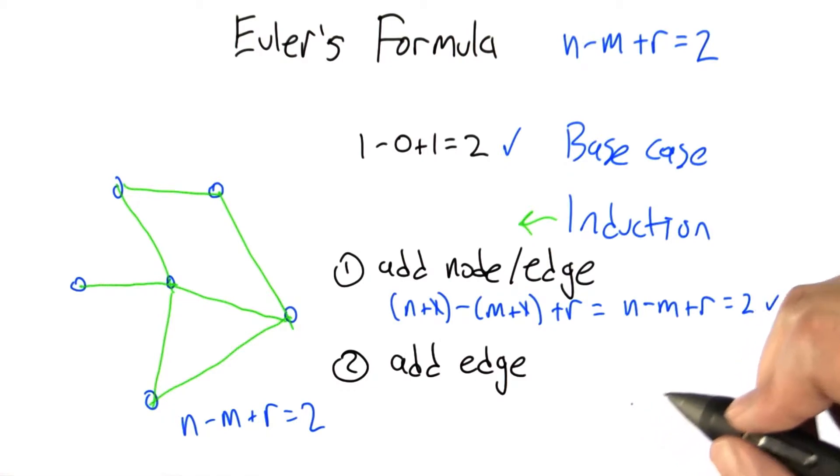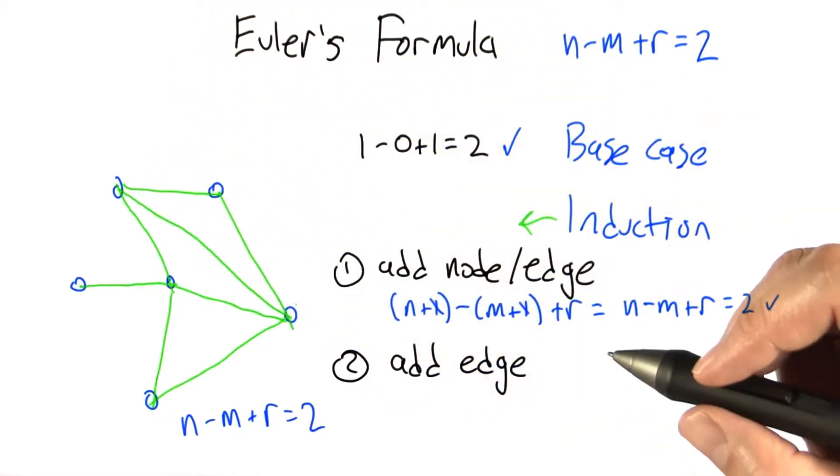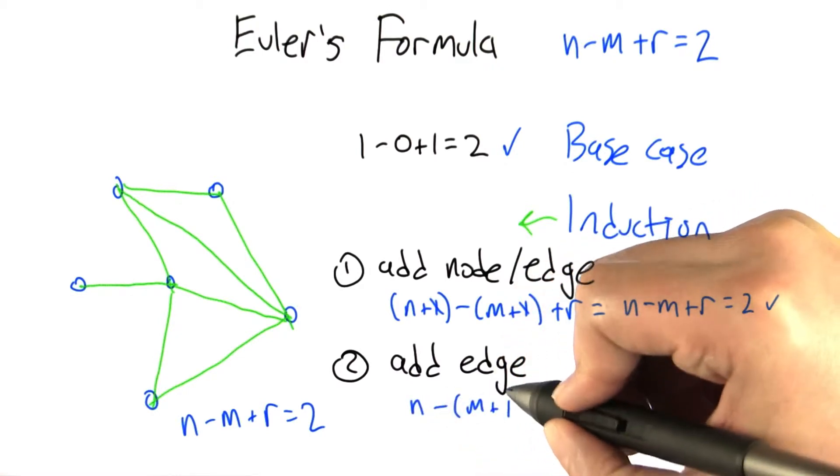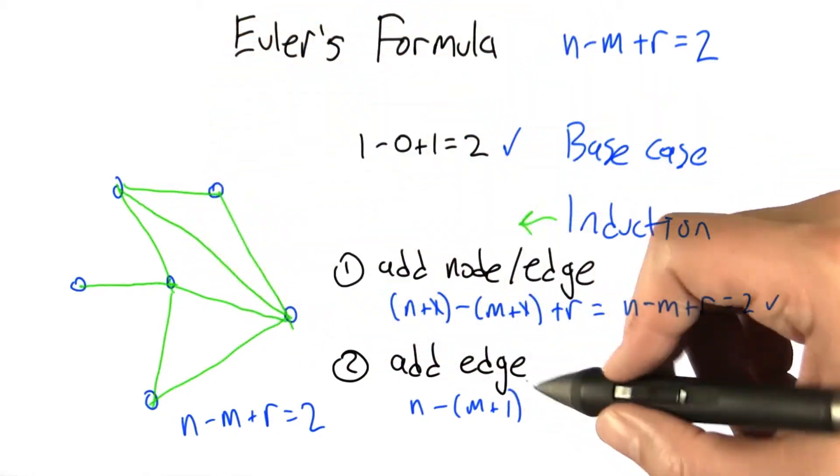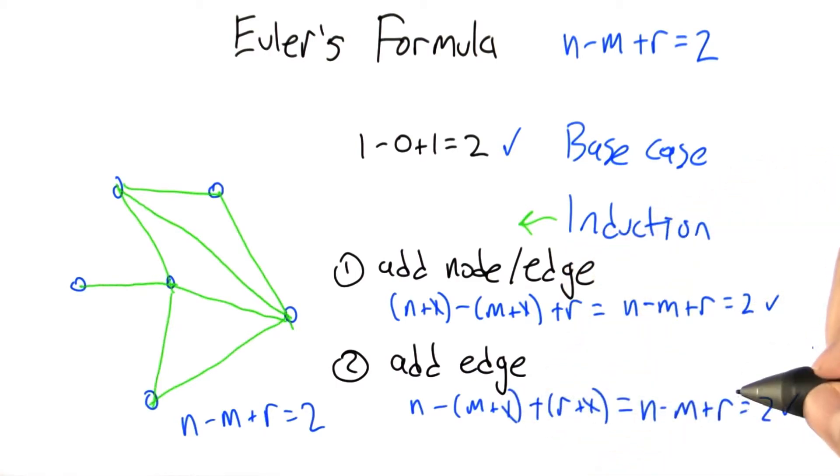What about the case where we just add an edge? So one way we can add an edge is inside of some other region. And let's look what happens in that case. The number of nodes is unchanged. The number of edges has gone up by 1, but the number of regions has gone up by 1 as well. So this used to be one giant region. It's now been split into two regions. And once again, these ones cancel. So our formula still holds.